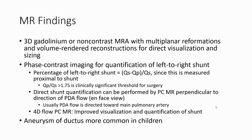3D MRA with non-contrast and contrast sequences and Ougie-gram with multiplanar reformatting and volume rendering reconstruction allows direct visualization. Phase contrast MRI is the best contrast imaging for quantification of left-to-right shunt — the percentage of left-to-right shunt should be calculated. Direct shunt quantification can be performed by PC-MRI perpendicular to direction of PDA flow. Pro-flow PC-MRI improves visualization and quantification of the shunt.